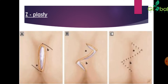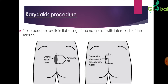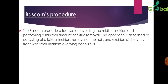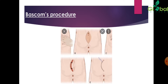The Z-plasty and T-plasty are shown in the picture and are part of plastic surgery — very effective procedures. The Karydakis procedure results in flattening of the natal cleft with lateral shift of the midline. The Bascom procedure focuses on avoiding the midline incision with minimal tissue removal, consisting of a lateral incision, removal of hair, and excision of the sinus tract with small incisions overlying each sinus. A picture showing the Bascom procedure is provided.